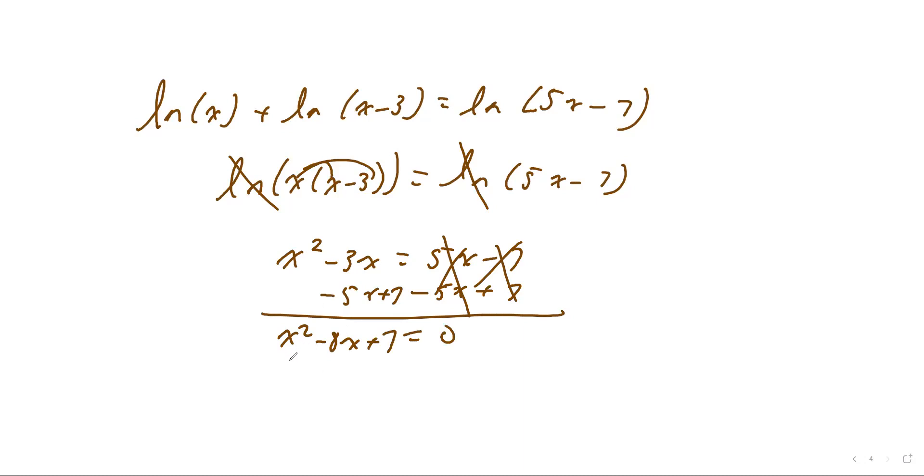So this becomes x squared minus 8x plus 7 equals 0. Then we just factor. So we now know a quadratic factors into two binomials, where the leading term will be x. All we got to do mathematically is figure out two numbers that multiply to 7 but add up to negative 8. And hopefully you're screaming it's negative 1 and negative 7 because that right there multiplies to a positive 7 but adds up to a negative 8. When we set each one of these equal to 0, you should get x equals 1 and x equals 7. Just got to test it. 1 minus 3 is negative 2, so 1 does not work. 7 works. 7 minus 3 is 4, that works. 5 times 7 is 35 minus 7 is still a positive number. So x equals 7 is the only answer there.